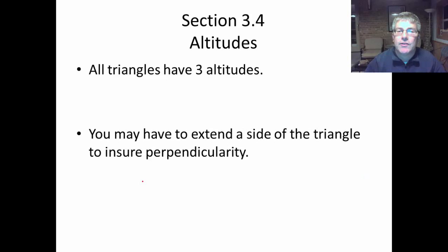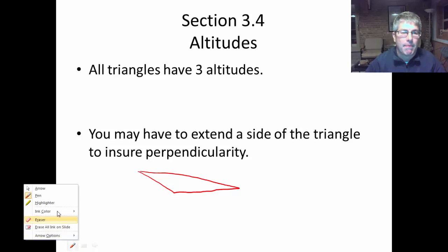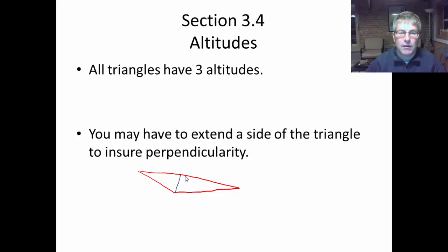Well, you may have to extend the side of a triangle to ensure perpendicularity. For example, if we have a triangle that looks something like this, certainly we can draw an altitude from this vertex that's perpendicular to its opposite side. However, from this one, not so easy. So our altitude is going to drop straight down, and we extend the side, and so there's our altitude.